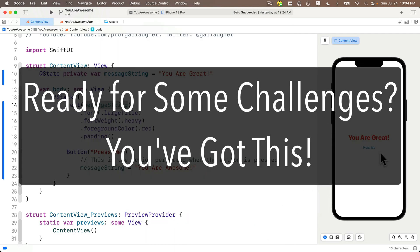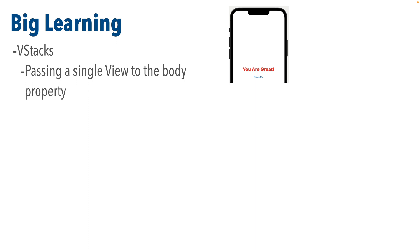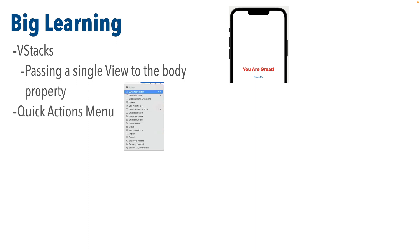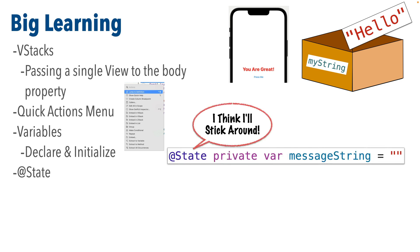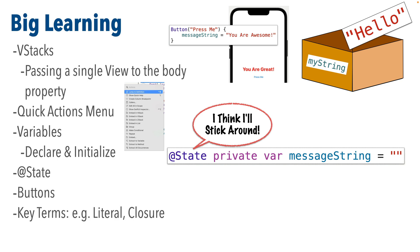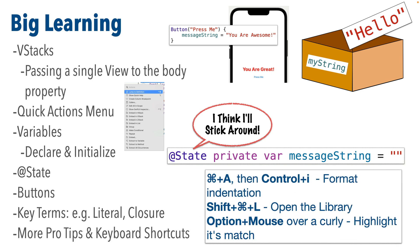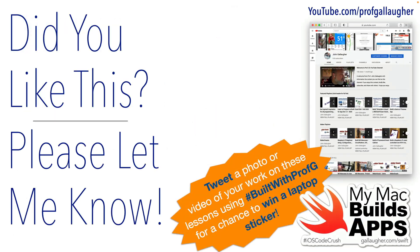Now that you've got a bit of stacking and button intro, in the next video we're ready for a couple of challenges to make sure you've got these skills down. We'll present solutions after the challenges. In this video we covered VStacks and why we need one, the quick action menu for embedding views, declaring and initializing variables, the @State property wrapper, building our first interactive button, key terms including literal and closure, and a bunch of super useful tips and shortcuts. Feel good about those skills, coder, and keep at it.